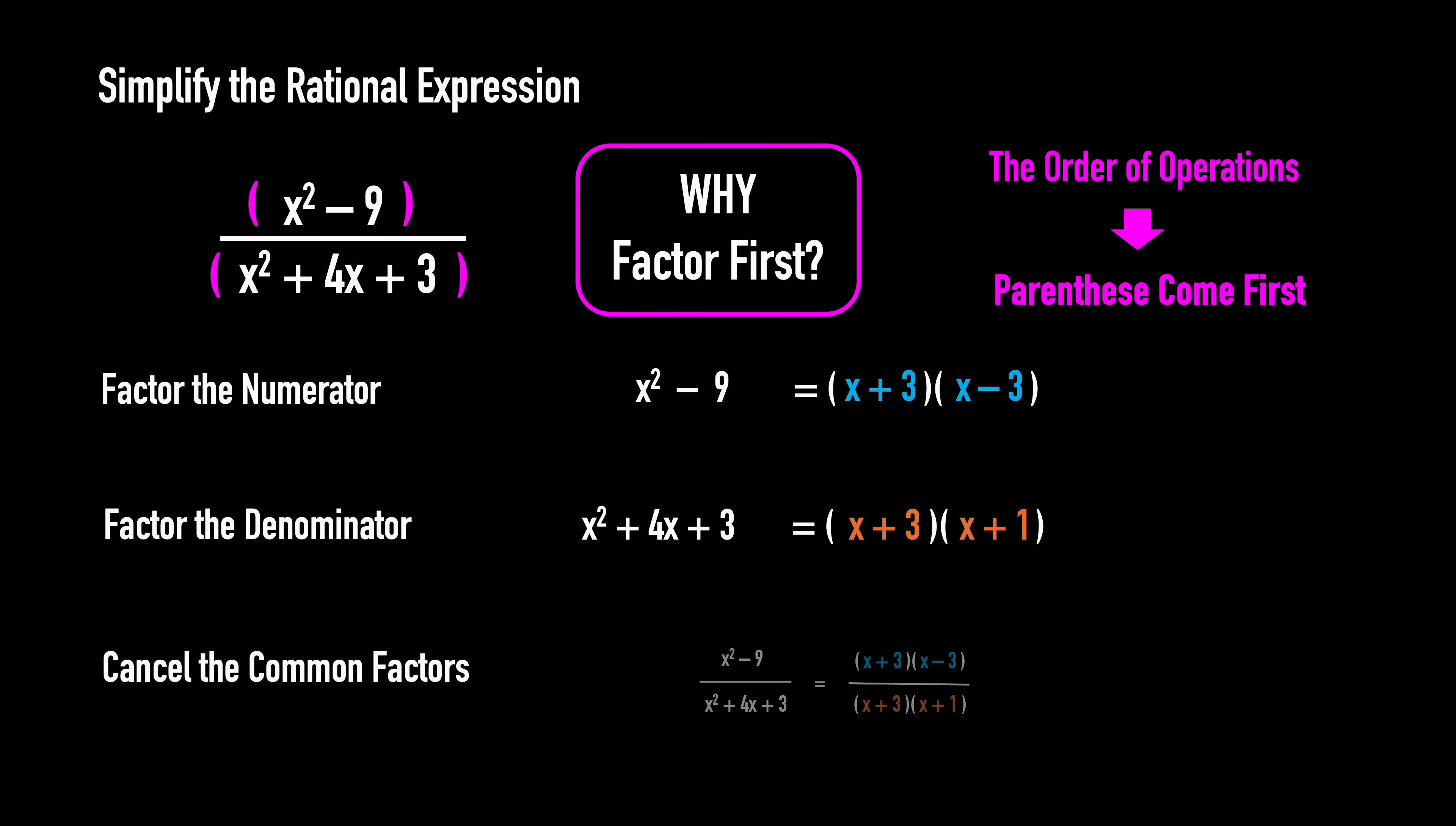Now, we cancel the common factors. Factors x plus 3 appear in both the numerator and the denominator. Let's cancel them. The remaining terms are x minus 3 divided by x plus 1. We're done.